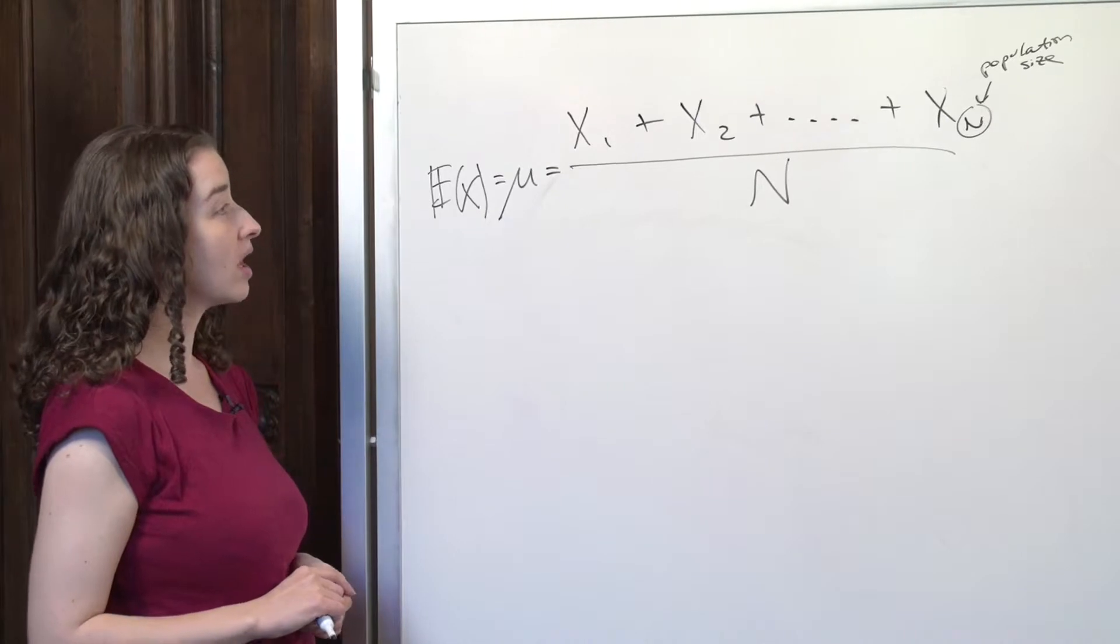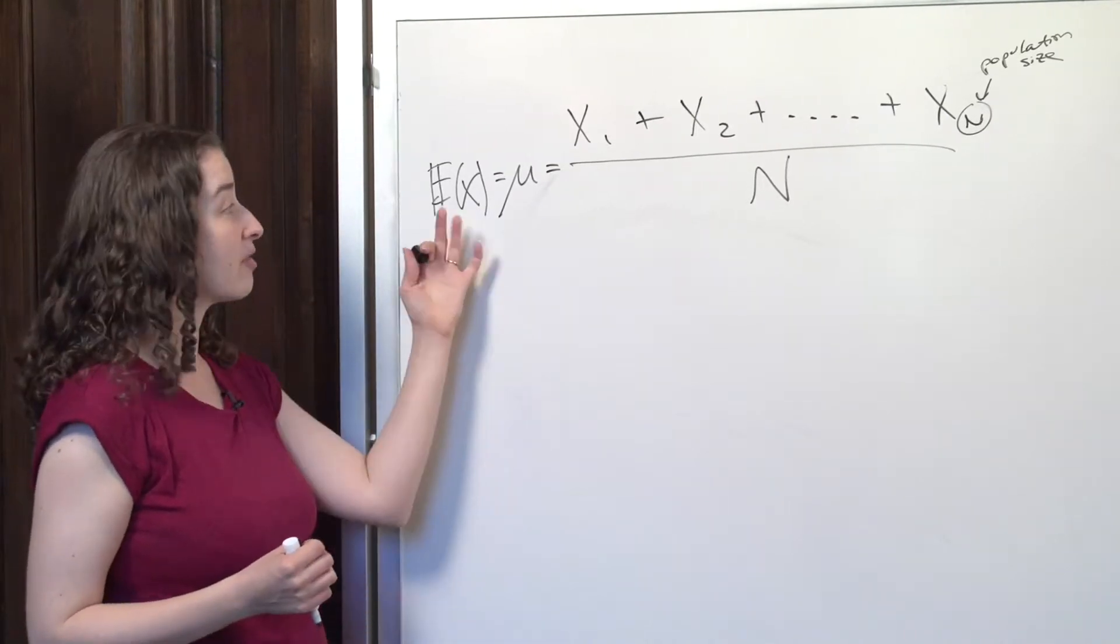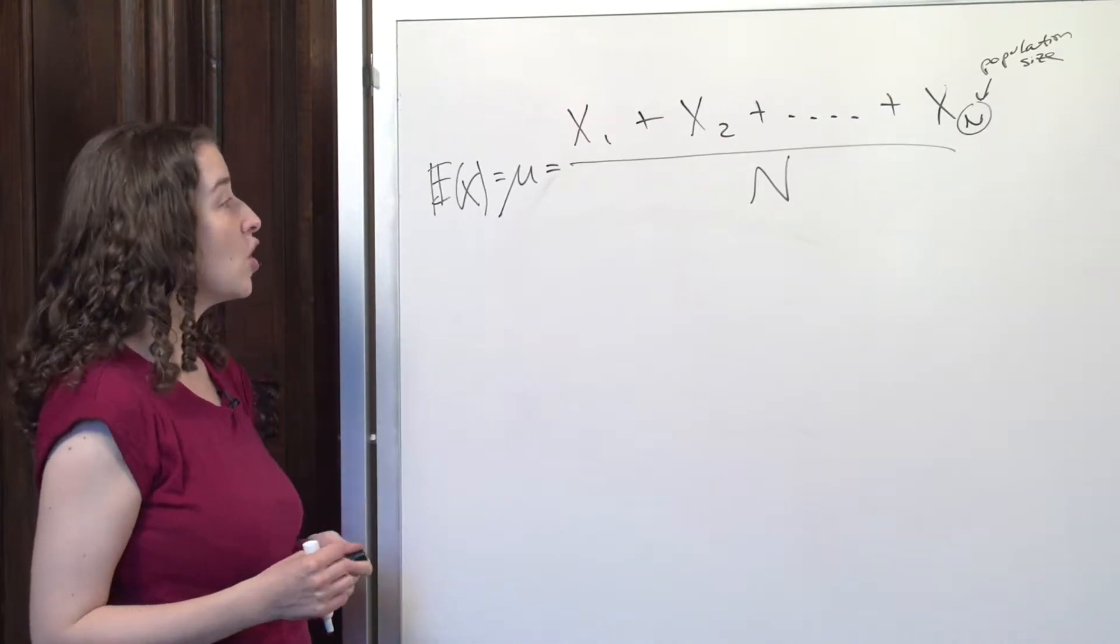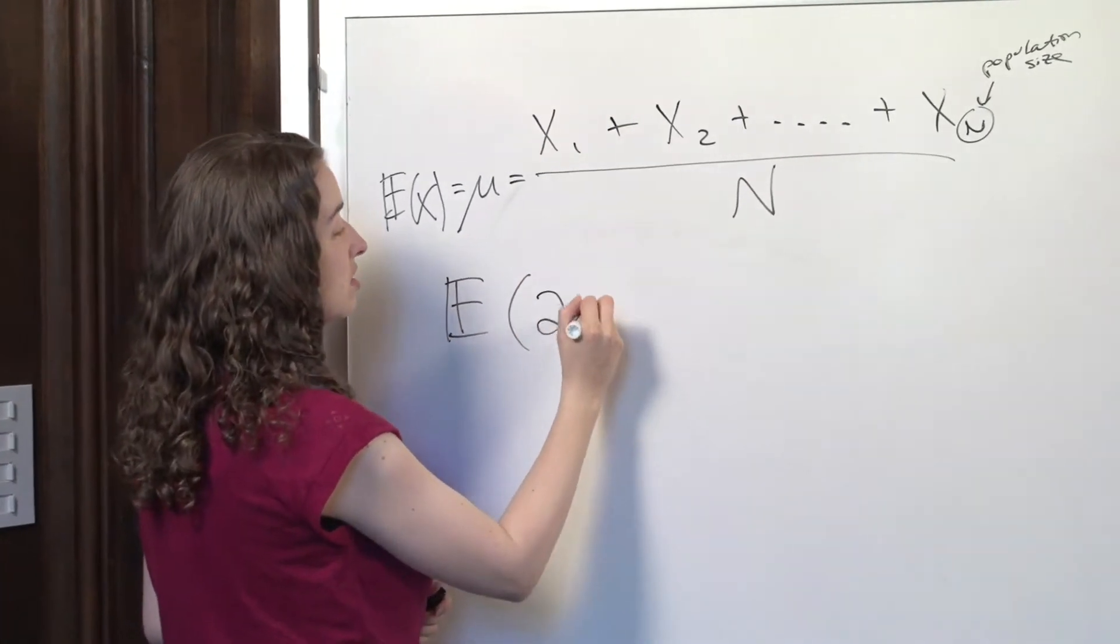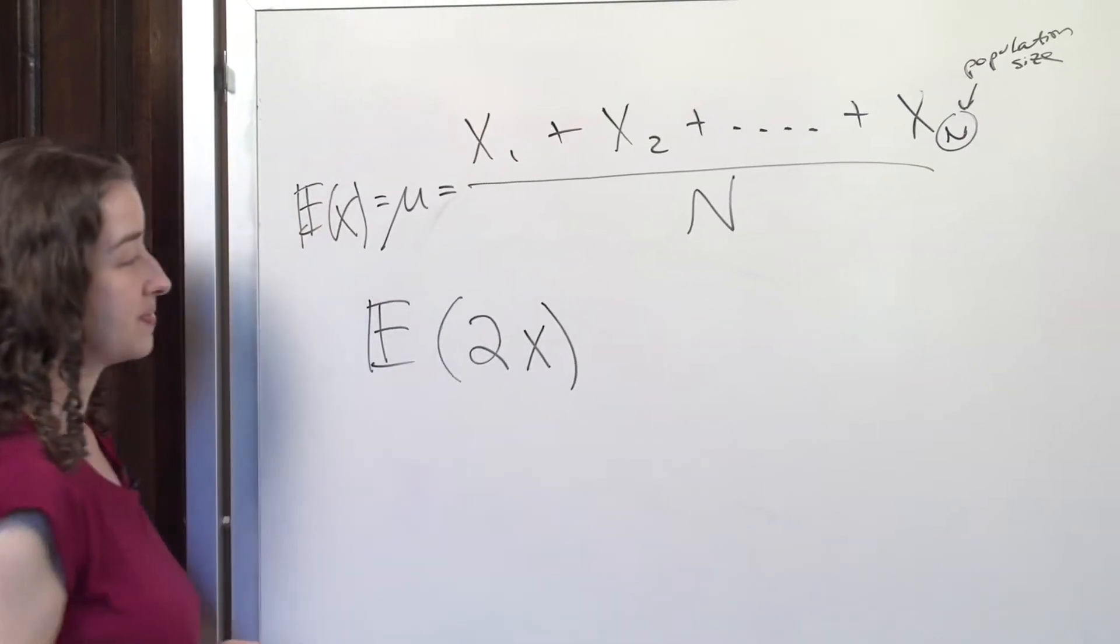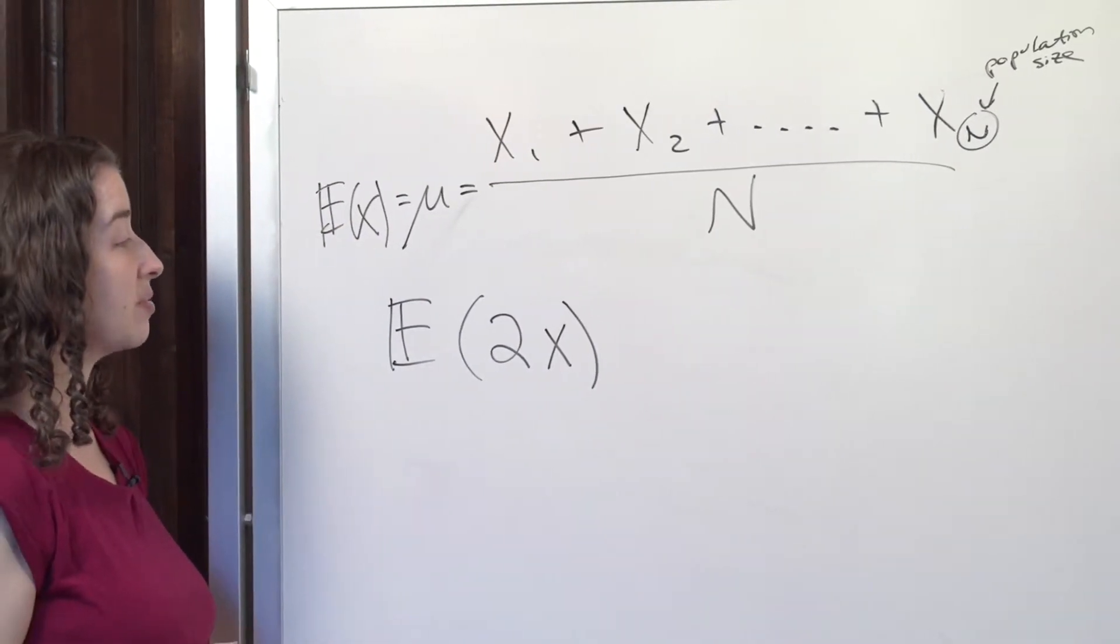So what kinds of properties does this operator have, this expectation? Well, what if I was interested in the expectation of some number, like 2 times X?